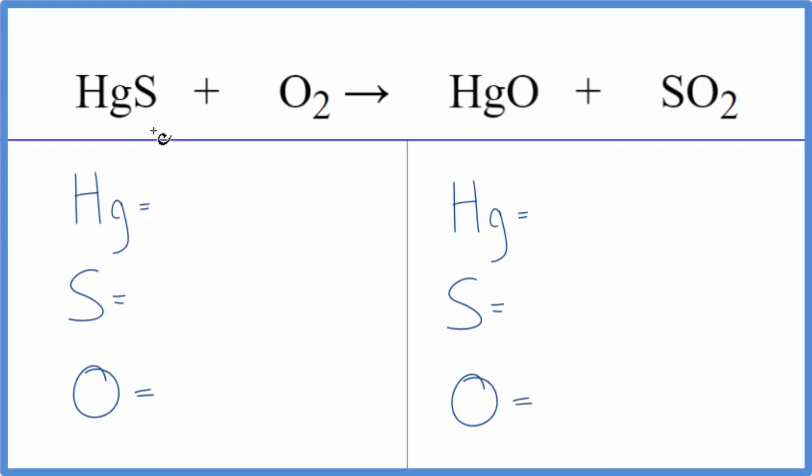In this video we'll balance the equation for HgS plus O2. This is mercury two sulfide and this is oxygen gas. So the first thing we'll do is count the atoms up. We have one mercury atom, one sulfur, and two oxygens.